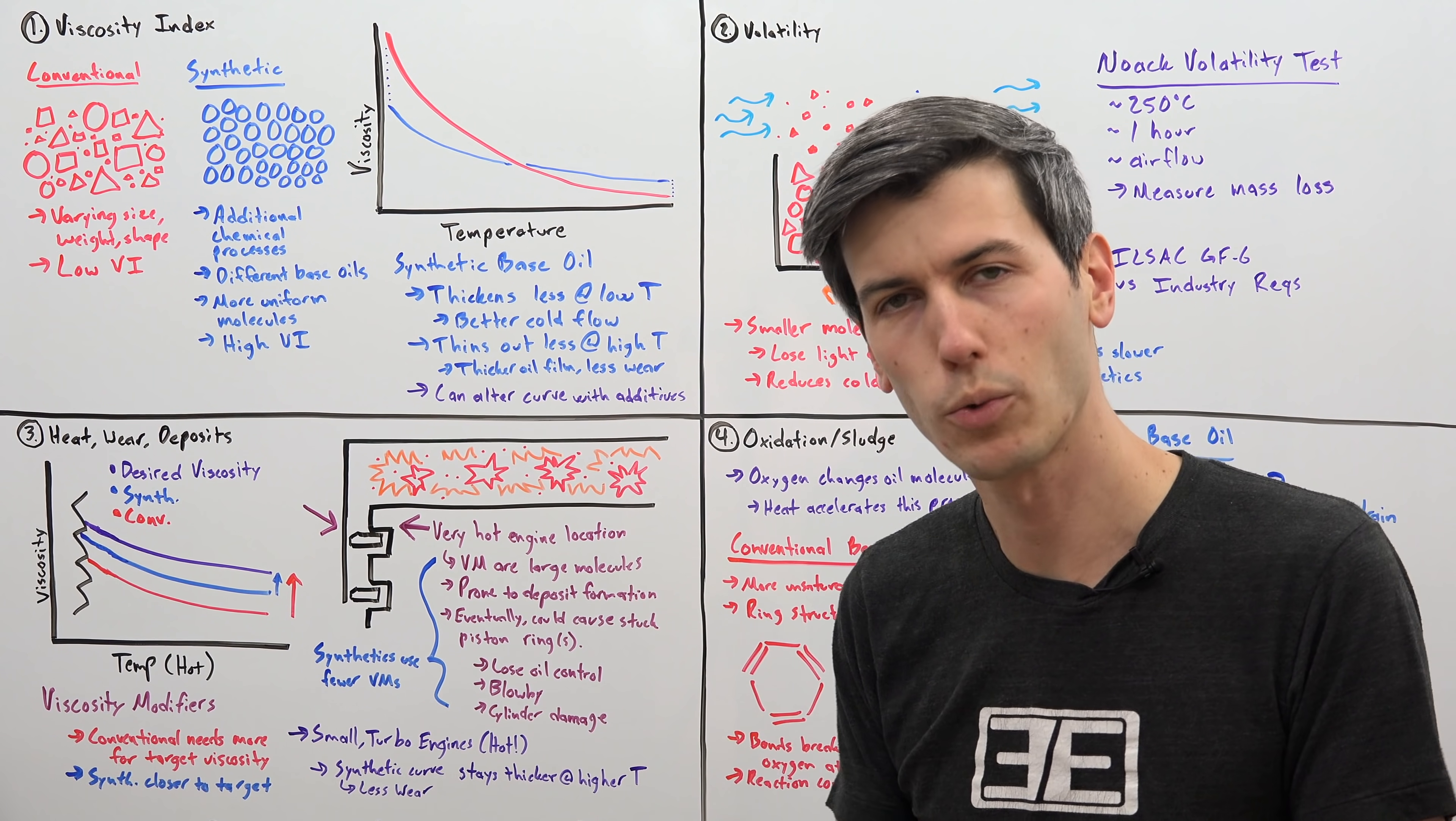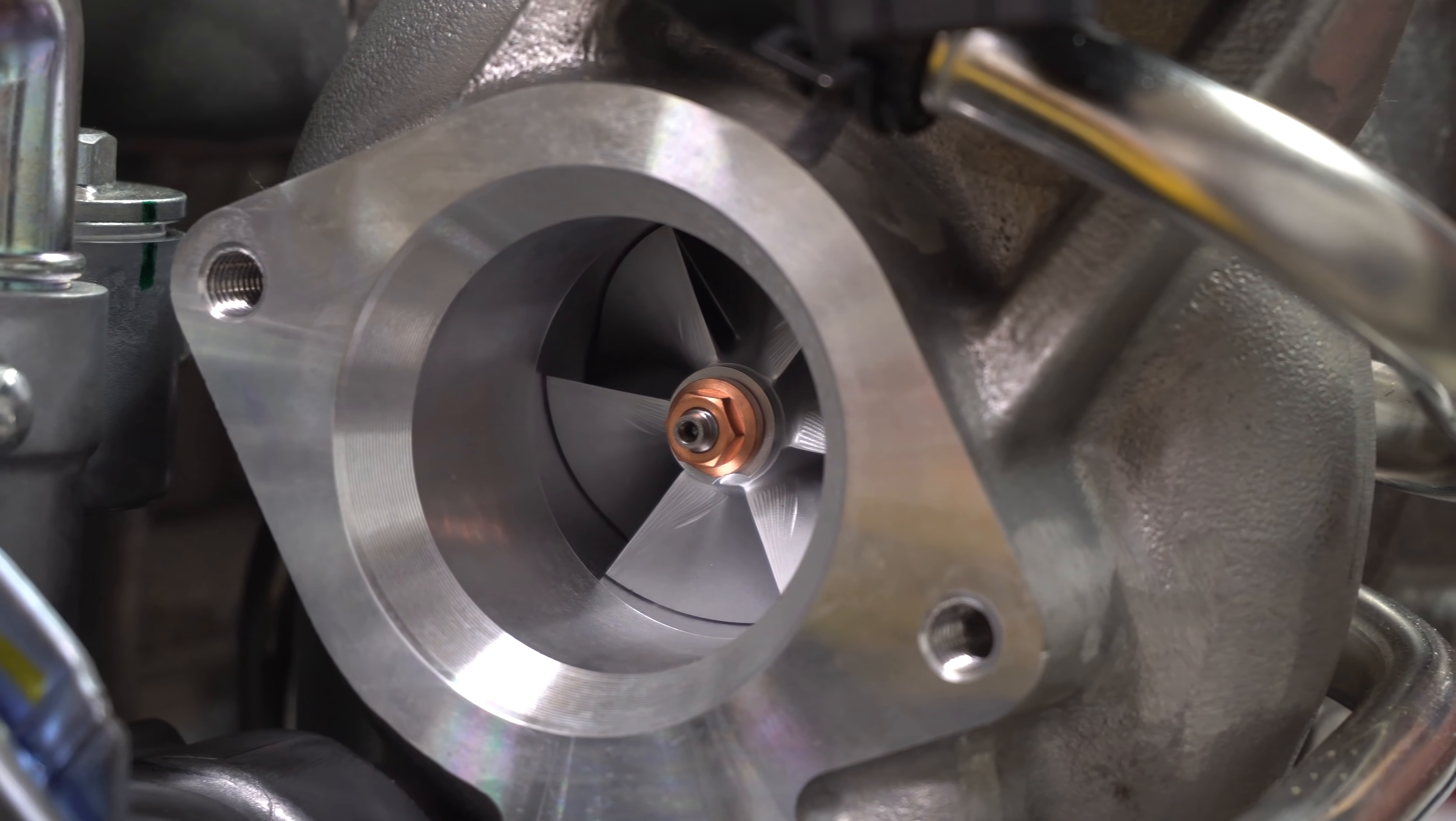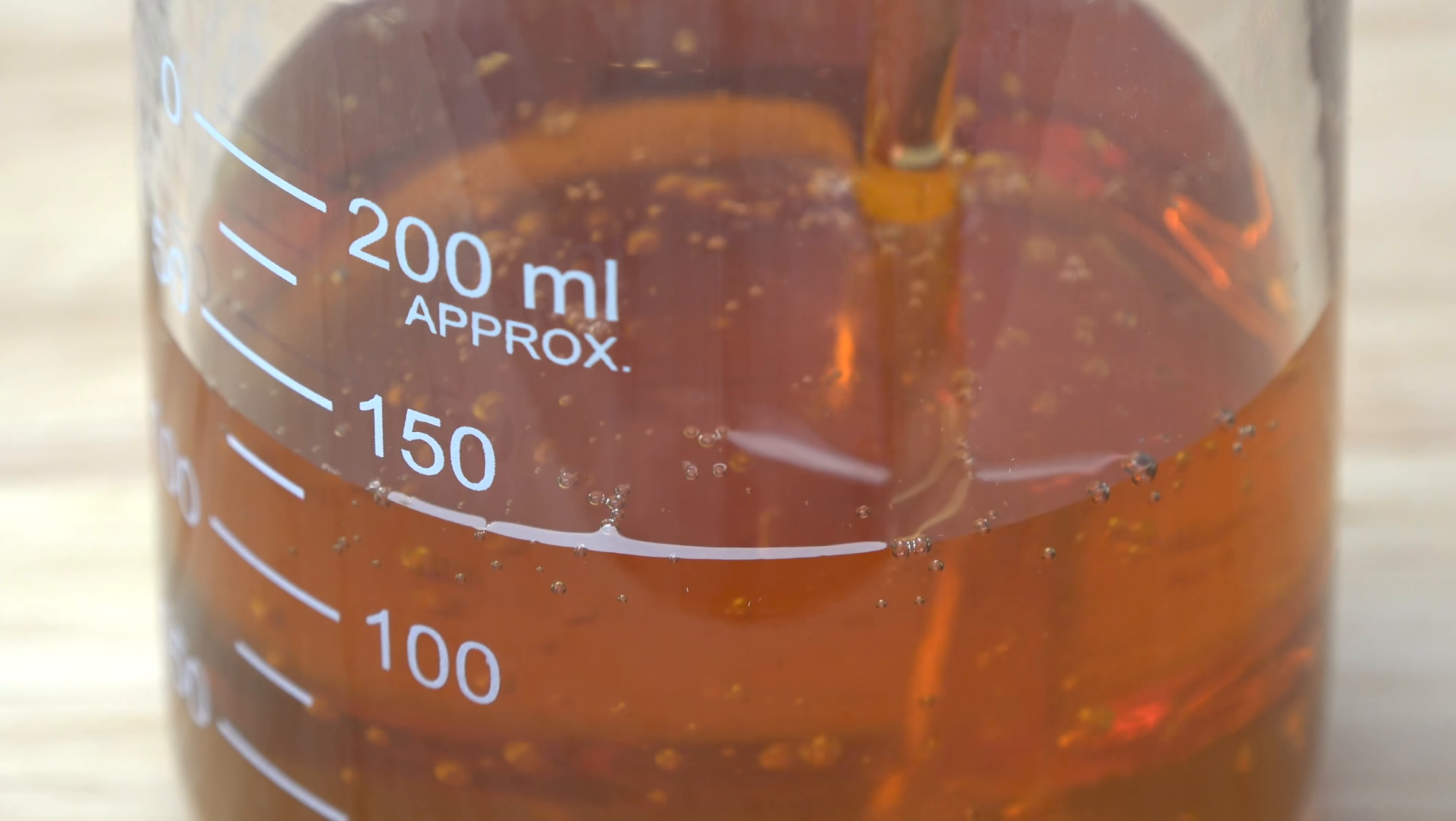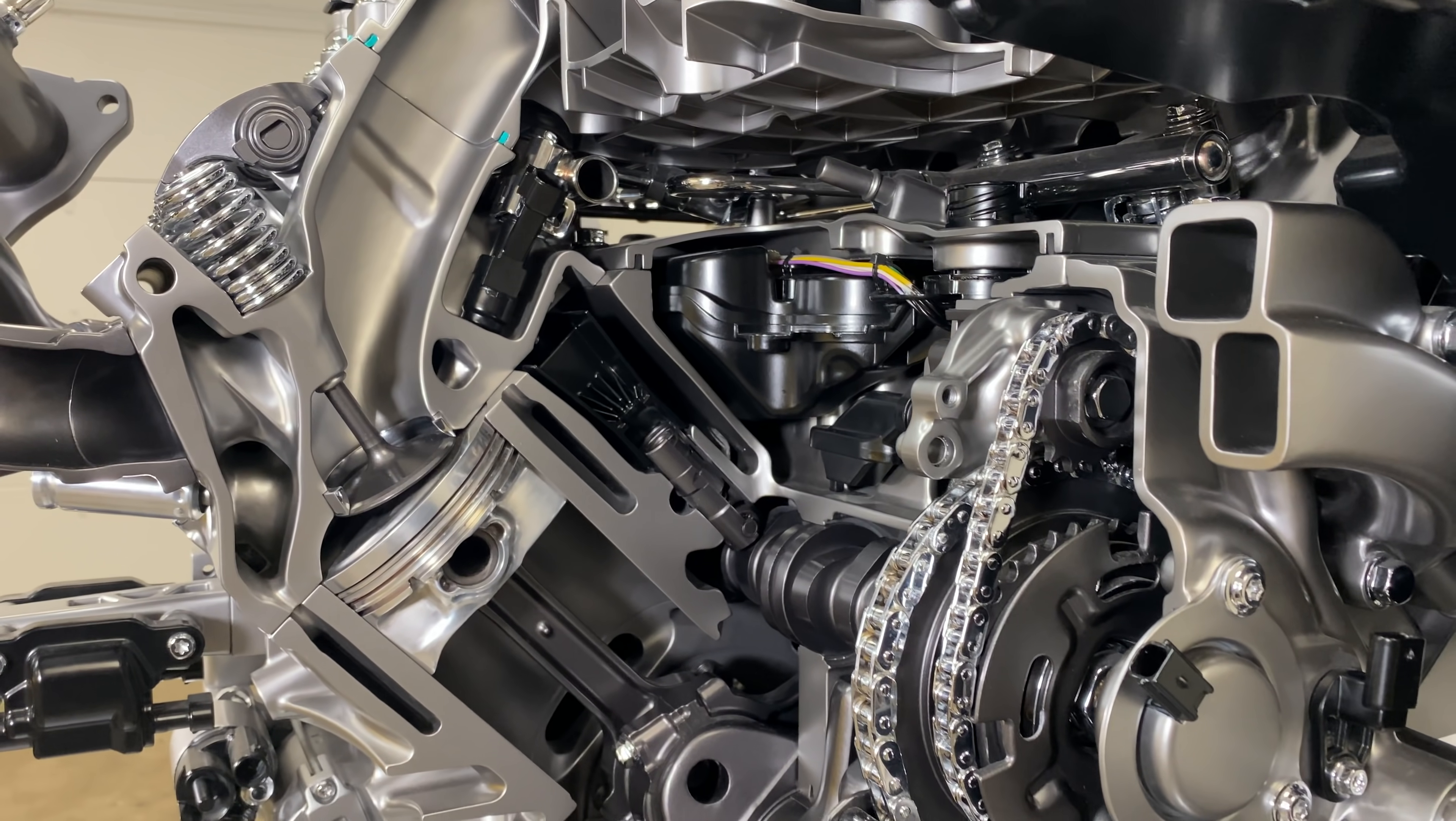Of course, another trend within the industry is moving towards small turbocharged engines. These small turbocharged engines have areas of very high heat concentration, a lot of heat in a smaller area. While they may all be rated for the same viscosity at one temperature, as you extend these curves out, what happens is because that synthetic oil has a better base oil that doesn't thin out quite as much with temperature, as you extend these curves, the synthetic actually remains thicker, and so it's able to better protect the engine at higher temperatures.